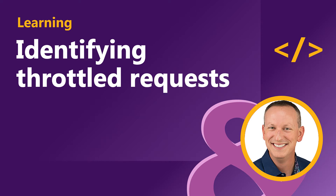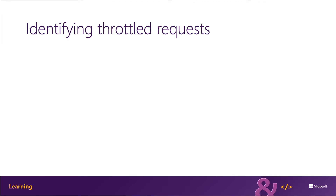The first step in understanding throttling is knowing how to identify when Microsoft Graph is actually doing the throttling. With HTTP APIs, the result of a request is indicated by the HTTP status code that's returned.